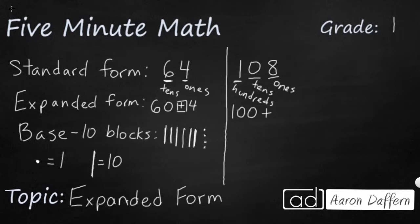Now here's the tricky part about 108. You see how there's nothing in my tens? I have 0 tens. We normally don't need to add 0 because that doesn't change the answer. So instead of saying 100 plus 0 plus 8, we're just going to say 100 plus 8. You can skip zeros when you're looking at expanded form.